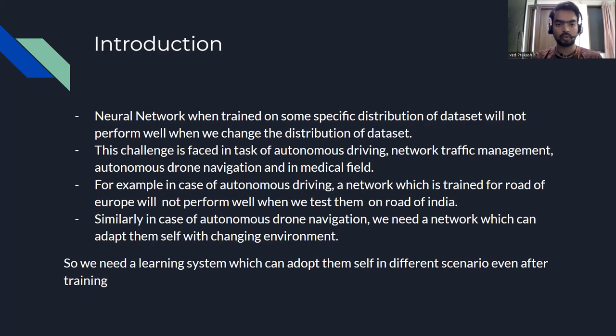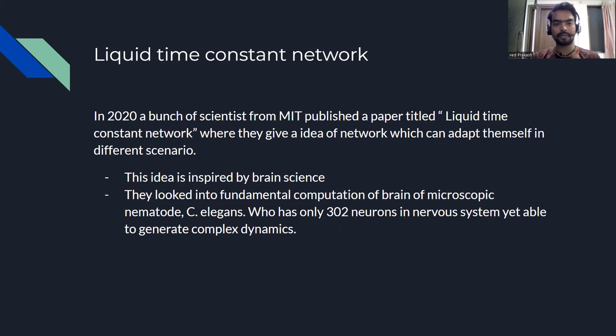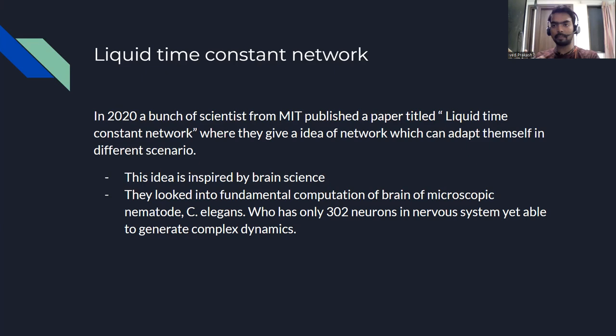These are some of the drawbacks of our current neural networks. In 2020, a bunch of scientists from MIT published a paper titled 'Liquid Time-Constant Networks,' where they give an idea of a network which can adapt itself to different scenarios. Their idea was basically inspired from brain science, and they looked into the fundamental computation of a macroscopic organism — C. elegans — which has only 302 neurons in its nervous system.